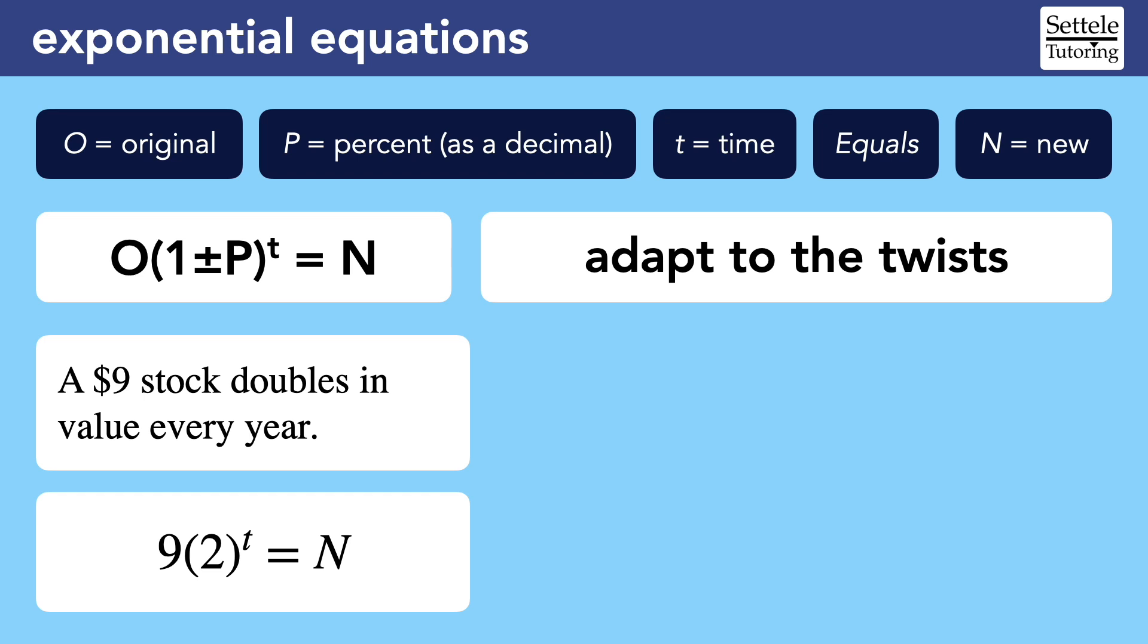We could think of this as a percentage if we really wanted to, because doubling in value is the same as increasing the value by 100% each year. 100% is 1 as a decimal for our value of P, and 1 plus 1 is 2. But most people will intuitively understand that doubling means that our growth rate should be 2.